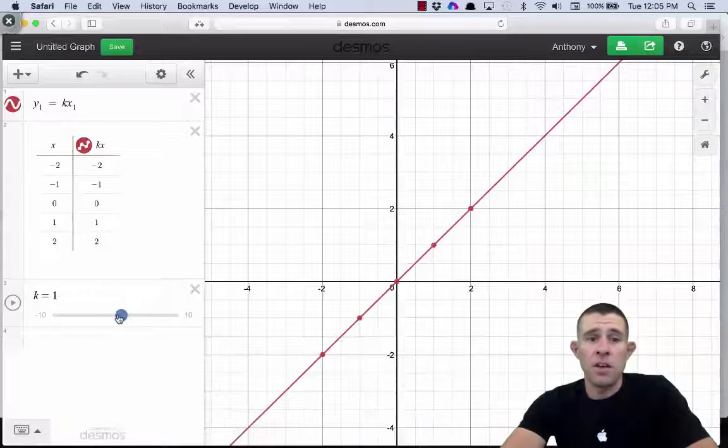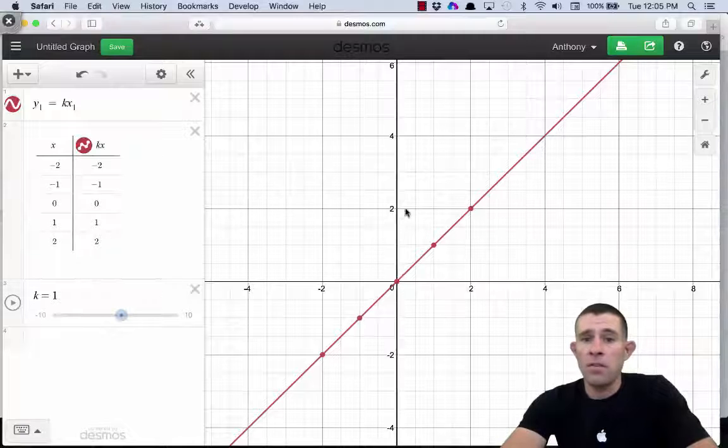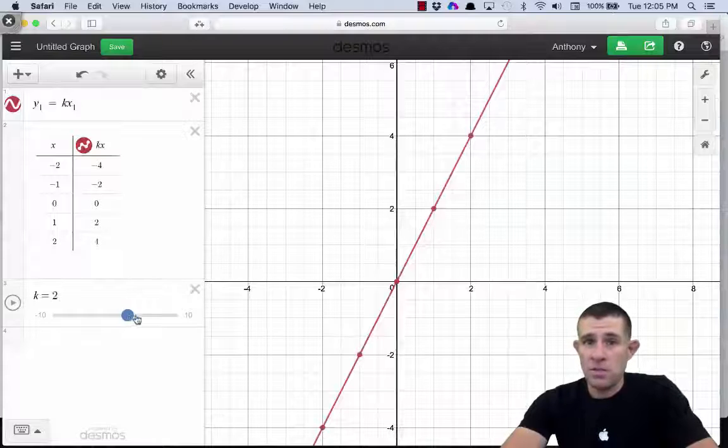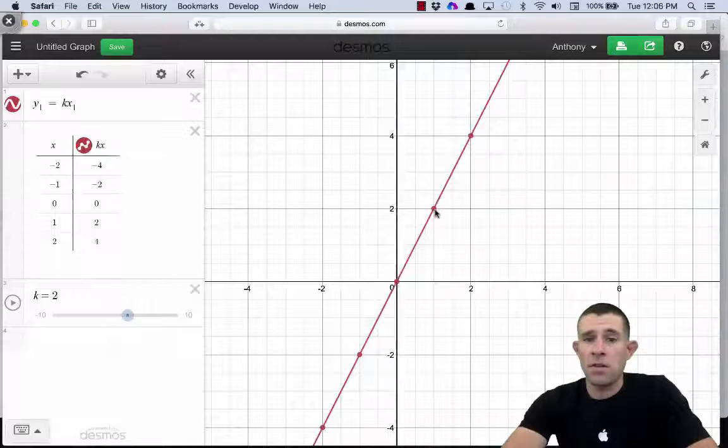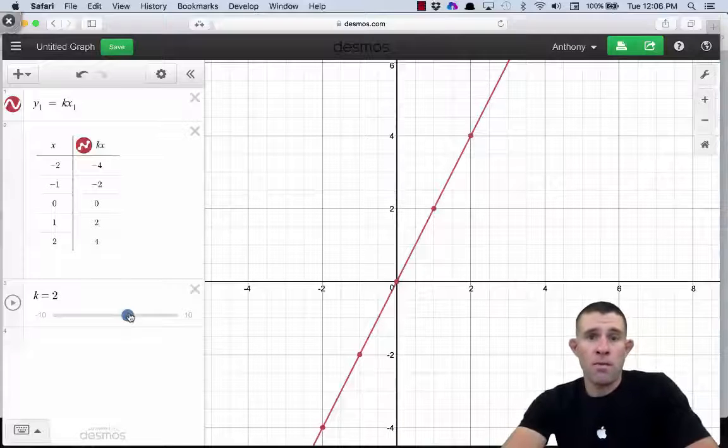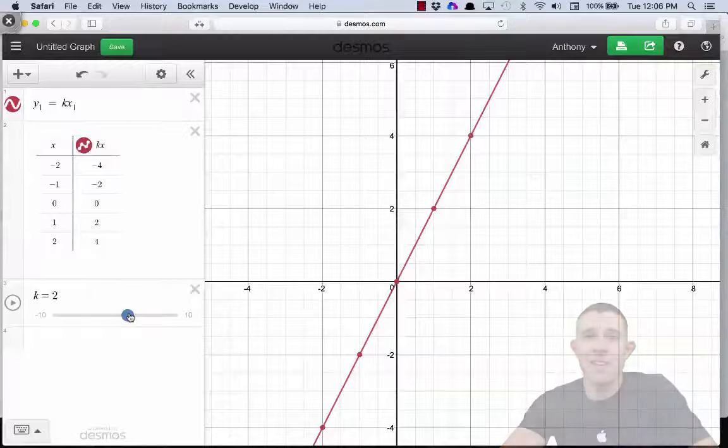You'll notice now, when we have k set equal to one, the rise over the run is also one. As we set that to k is equal to two, you can see now our rise over our run is equal to two over one, making that slope, or that rate of change, equal to the constant of variation, which is two in this case.